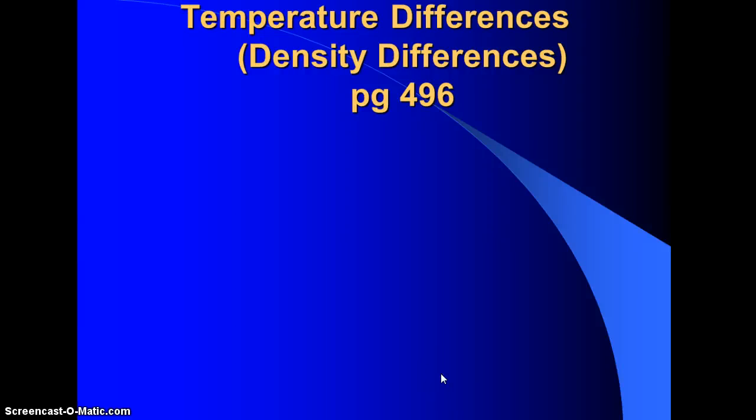This is Unit 3, Segment 2 Notes. We were talking about causes for surface currents, and we are on temperature differences. Temperature differences, if you remember from the Motion in the Ocean lab, created a density difference — so you have warm water rising and cold water sinking.